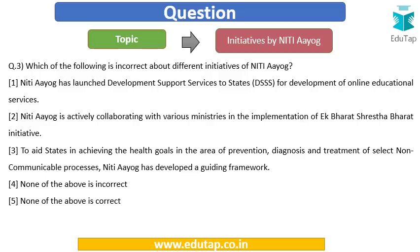Next question: Which of the following is incorrect about the different initiatives of NITI Aayog? Option 1: NITI Aayog has launched Development Support Services to States for development of online educational services. Option 2: NITI Aayog is actively collaborating with various ministries in implementation of Ek Bharat Shreshtha Bharat to aid states in achieving health goals in prevention, diagnosis, and treatment of non-communicable diseases. Option 3: NITI Aayog has developed a guiding framework. Then: none of the above is incorrect, or none of the above is correct.